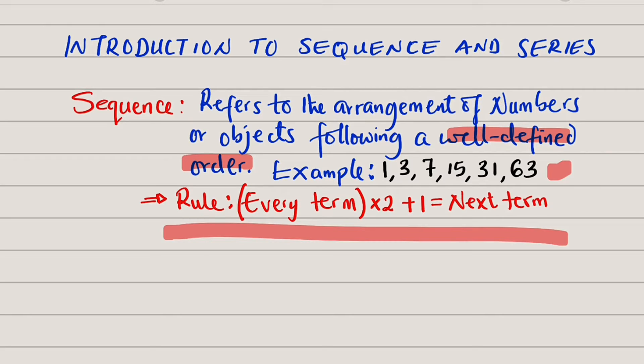Now let us test for members at random to see whether this statement is true. Let us take this 7 right here. 7 multiplied by 2, I believe is 14. Then 14 plus 1 is equal to 15. That is true. Let us take that 31. That 31 multiplied by 2 is equal to 62, and 62 plus 1 is equal to 63.